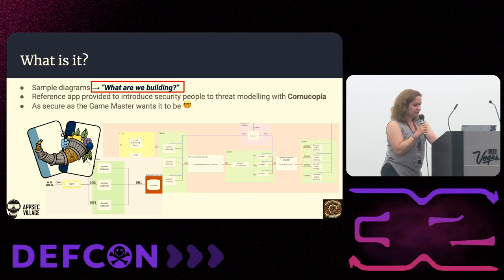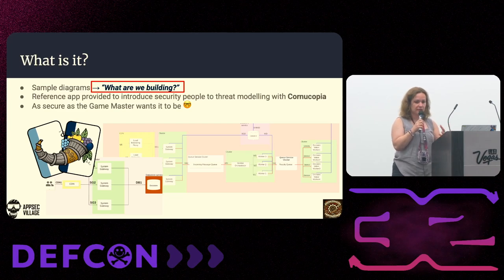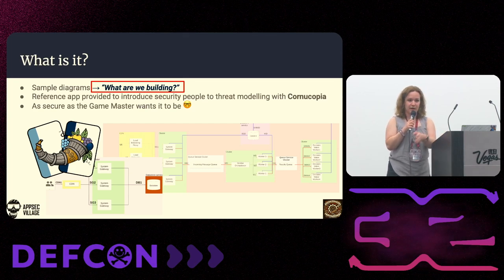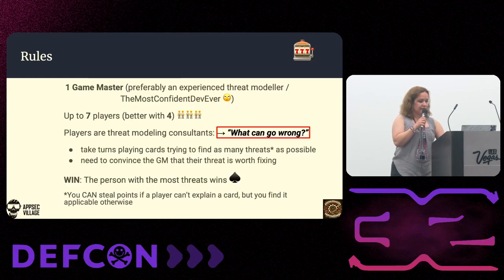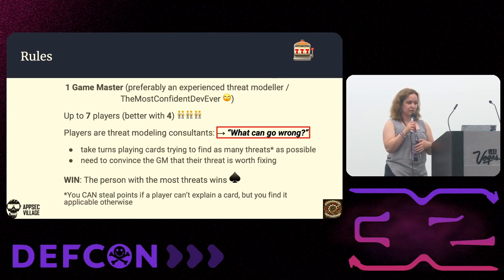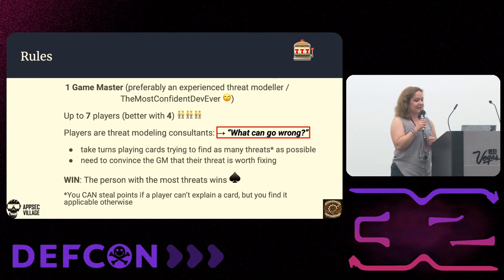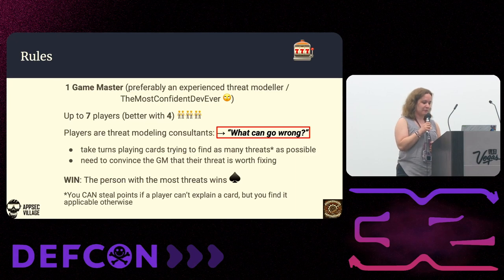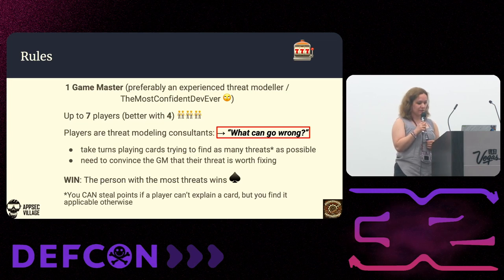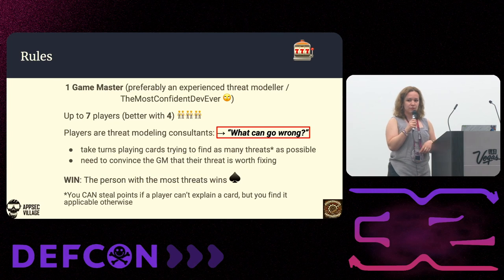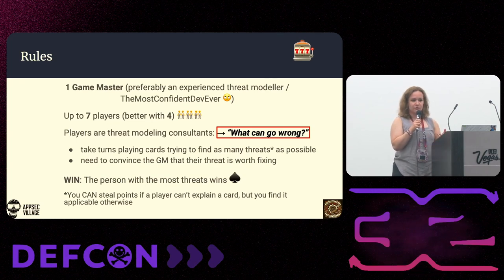So what is Engineers and Exploits? It's a mini game that can help because it gives you some sample diagrams. It can be as complex or as simplistic as the game master wants it to be. And it helps because you're not jumping straight into a threat modeling exercise for your actual production app — you're doing something as a game to understand the concept. It has a few rules: there's a game master. There are four to seven players around the table, each with around seven cards. They all impersonate security consultants on a mission to find what could go wrong and convince the game master to open Jira tickets and fix those issues before the app goes into production.